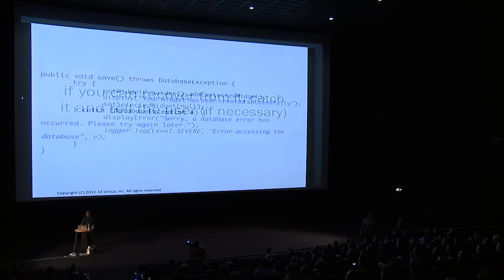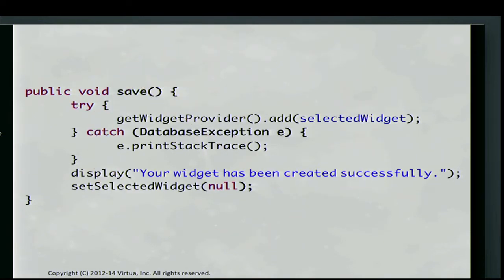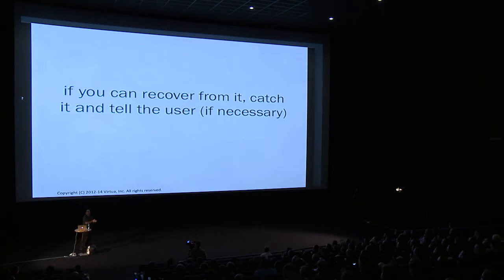The general rule is that if you can recover from an exception, catch it and tell the user if necessary. The key part is 'if you can recover from it.' There are cases where something may happen in your application and there's really not much you can do about it. For example, if the LDAP server is down, your application really can't do much — so maybe you just tell the user 'LDAP server down, come back later,' maybe you log it, maybe your logger sends an email.